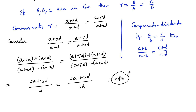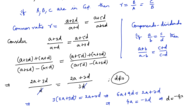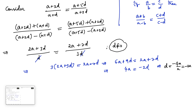Assuming d ≠ 0, we cancel d from both sides and cross-multiply: 3(2a + 3d) = 2a + 7d, giving 6a + 9d = 2a + 7d. Therefore 4a = −2d, or d = −2a.